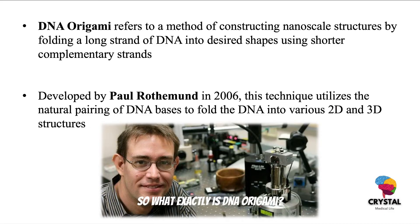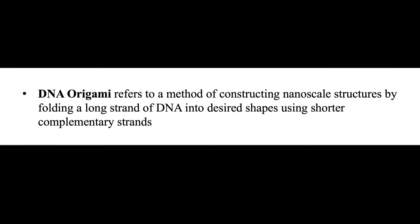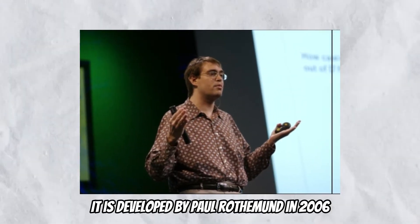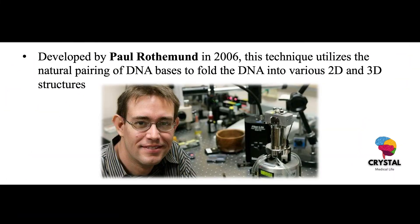So what exactly is DNA origami? DNA origami refers to a method of constructing nanoscale structures by folding a long strand of DNA into desired shapes using shorter complementary strands, also known as staple strands. It was developed by Paul Rothemund in 2006. This technique utilizes the natural pairing of DNA bases to fold DNA into various 2D and 3D structures.